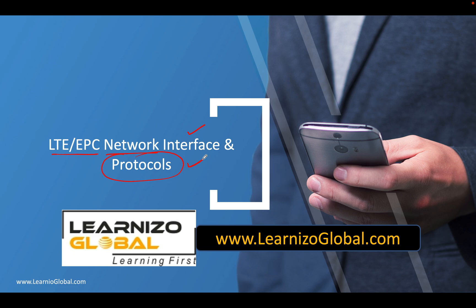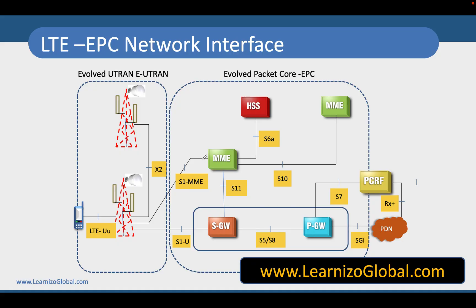Now, before we talk about all these interfaces individually, let's have a look at the complete picture. And here we see some interfaces, such as the LTE-Uu interface, which is the interface between the UE and the eNodeB. We have the X2 interface, which connects one eNodeB to another eNodeB, and this is not a mandatory interface but is an optional interface.